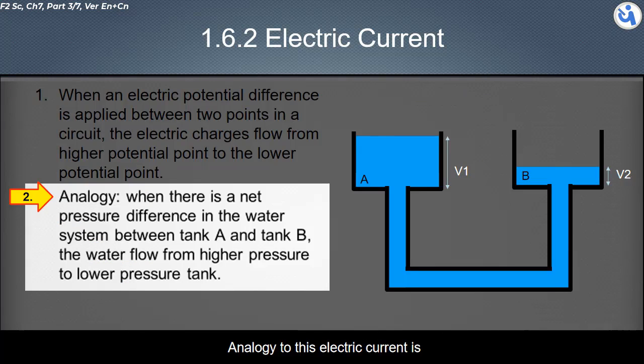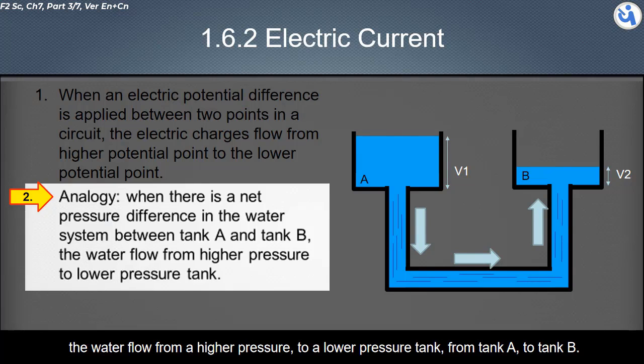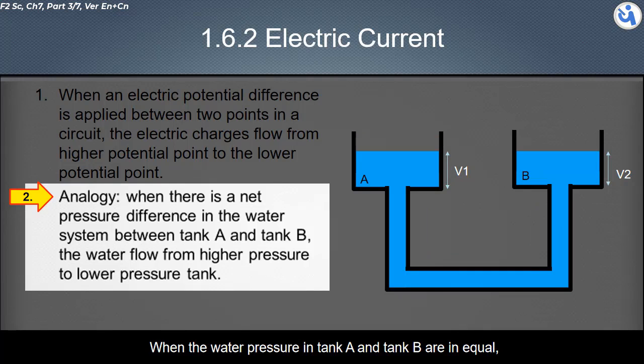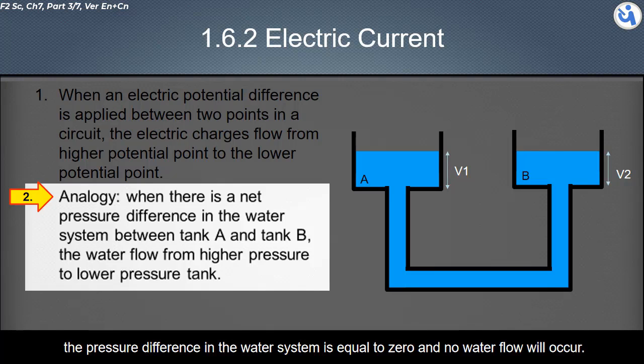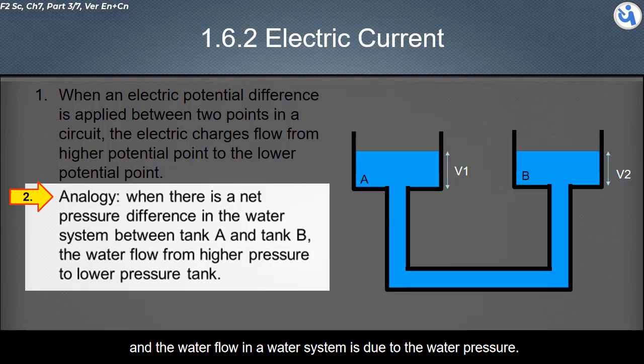Analogy to this electric current is when there is a net pressure difference in the water system between tank A and tank B. Water flows from higher pressure to lower pressure tank. When the water pressure in tank A and tank B are equal, the pressure difference is zero and no water flow will occur. The conclusion is electric current is due to potential difference, and water flow is due to water pressure.